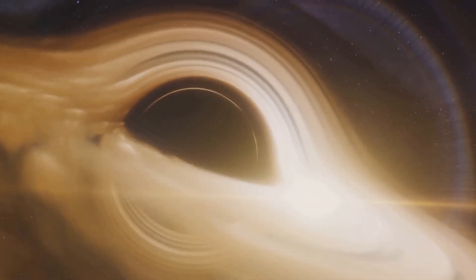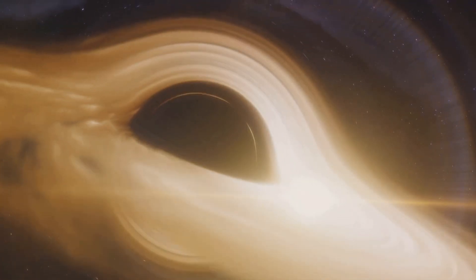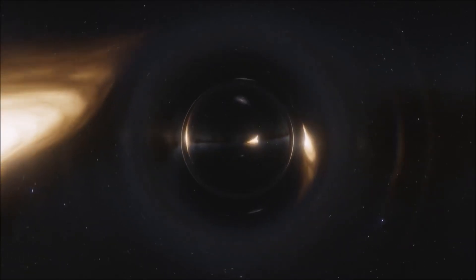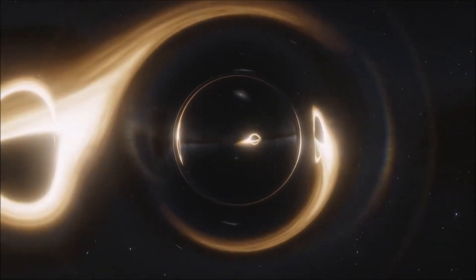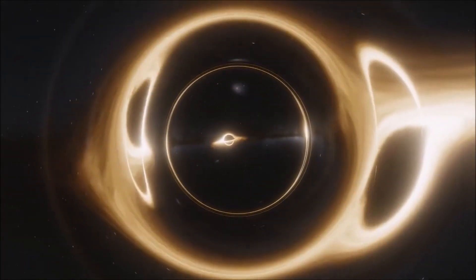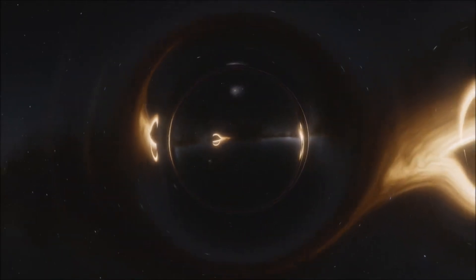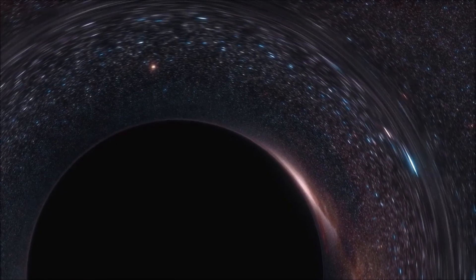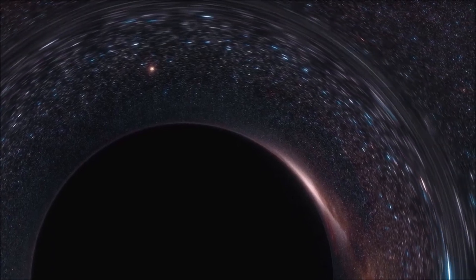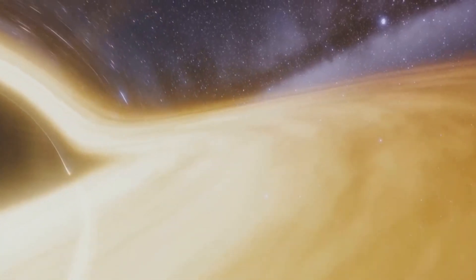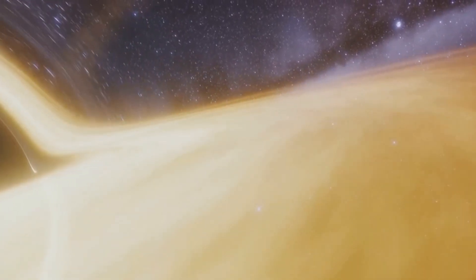Hawking radiation, according to the physicist, was a result of quantum fluctuations near the event horizon of a black hole. This meant that black holes could slowly lose mass over time, a concept known as black hole evaporation. Here's where things get really interesting. If black holes evaporate, what happens to the information they consumed? Hawking suggested it might be lost forever, contradicting the principles of quantum mechanics, which state that information can never be destroyed.